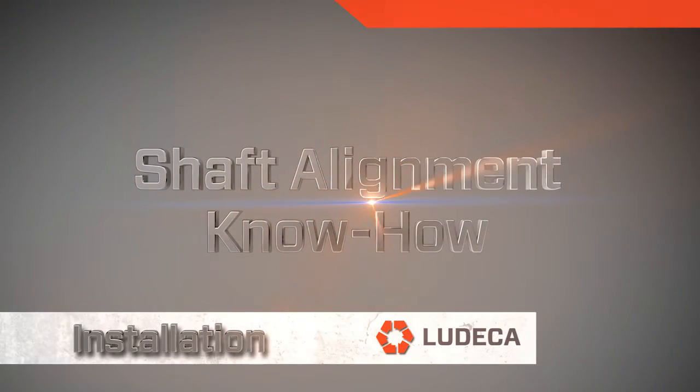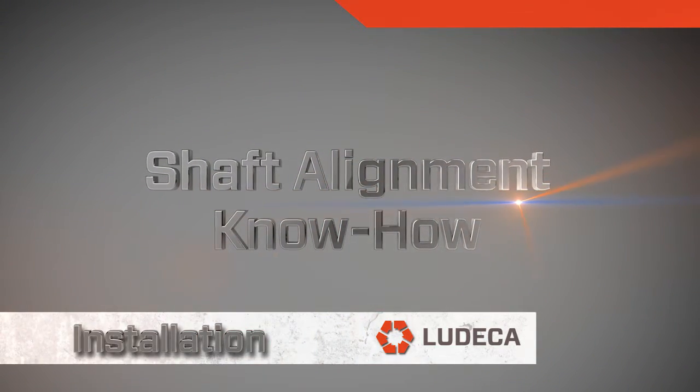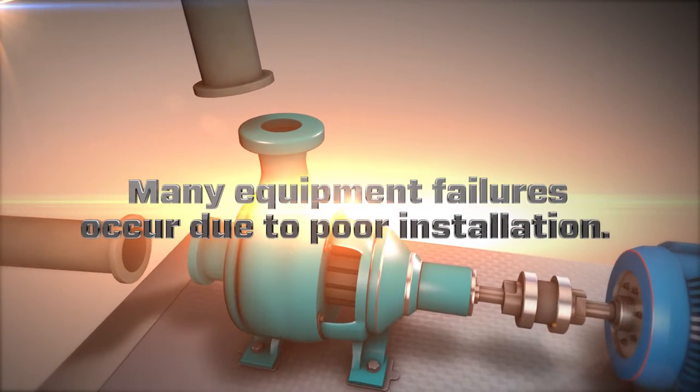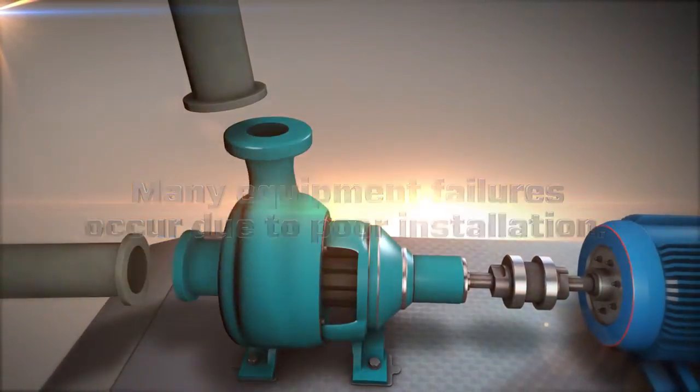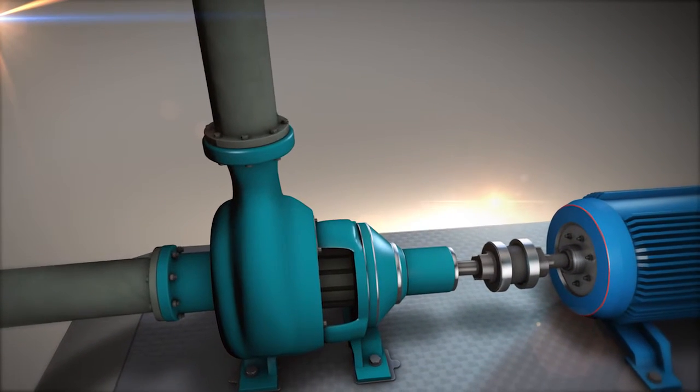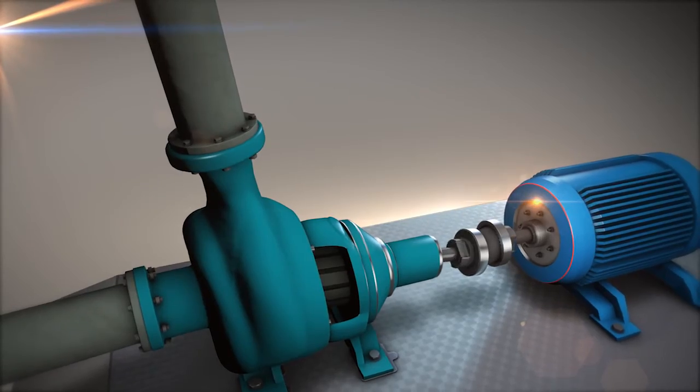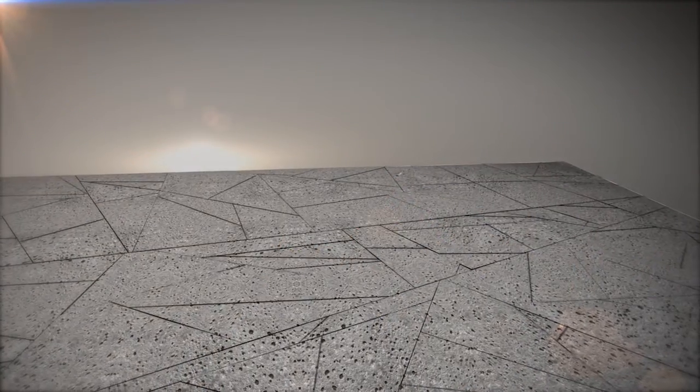Shaft alignment know-how installation. Many equipment failures occur during what is called the infant mortality period, in other words soon after machines are first put in service, and are typically due to poor installation.